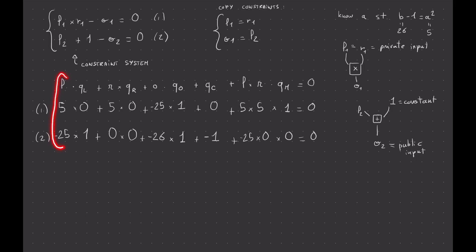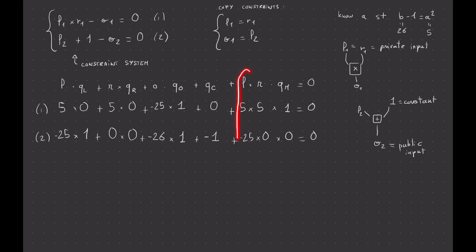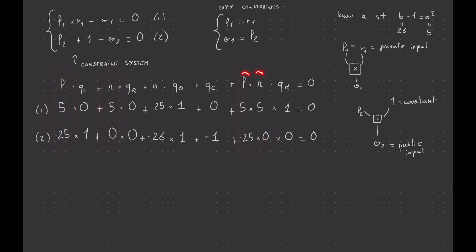These vectors contain all of the different values they can take throughout the equations. Since we only have two equations, they'll be vectors of size two. L will be [5, −25], QL will be [0, 1]. Usually these Q vectors are just vectors of zeros and ones, except for QC which can hold other values. We already have vectors for L and R, so we reuse those.